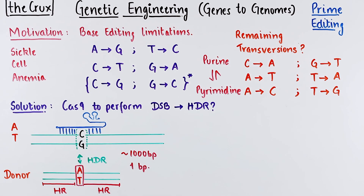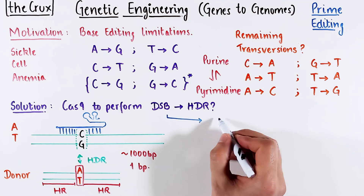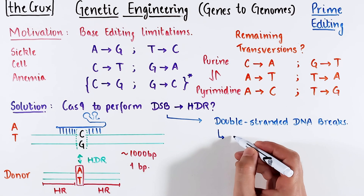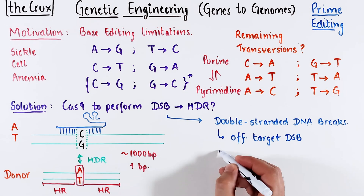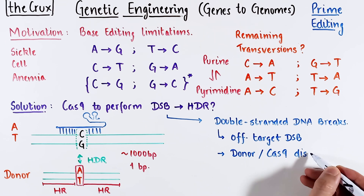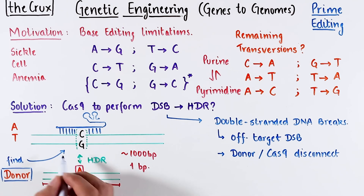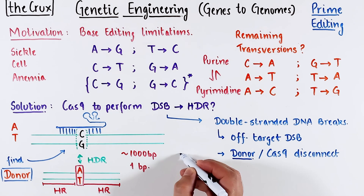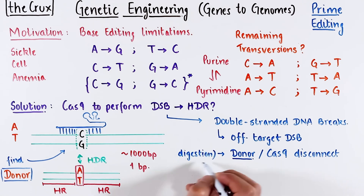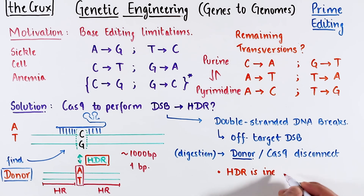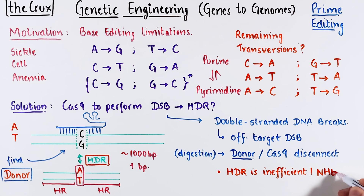A 1000-to-1 information change seems quite wasteful. Not only that, Cas9 performs double-stranded breaks and off-targeting can be a serious problem. It is also fundamentally inefficient because the donor and Cas9 are disconnected — Cas9 cuts DNA independently of the donor DNA, and the donor DNA has to find the repair location in a blind and unassisted manner. It is also possible that the donor DNA is digested before it can repair the break, and HDR isn't the most efficient process, especially competing with other repair mechanisms.